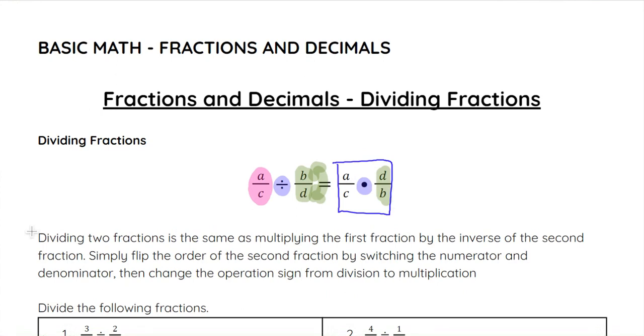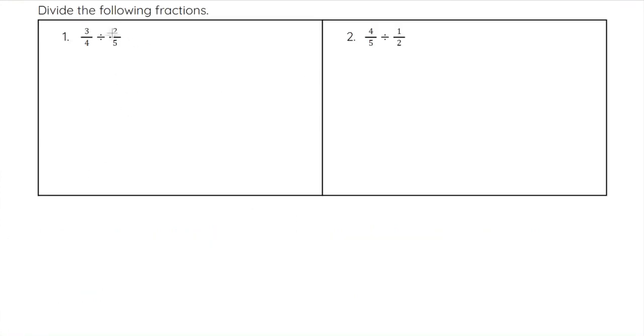So let's take a look at our first examples. On number one, we have three-fourths divided by two-fifths. Anytime we see division between fractions, we want to rewrite it, leave the first one as three over four, division changes into multiplication, and then we switch the top and the bottom of the second fraction. So that becomes five over two.